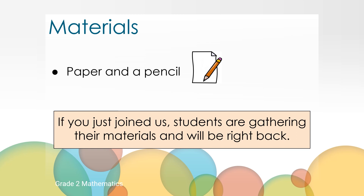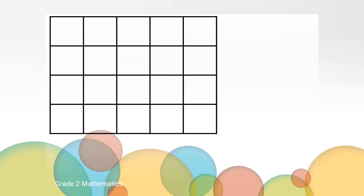Welcome back, let's get started. We will get started with a counting warm-up. We are going to count by tens off the decades starting at 13. I'll help you get started, then you can keep counting as you see the numbers appear. We'll stop when we get to 203 and then continue by counting backwards. You'll see the numbers flash to help you keep track of where we are.